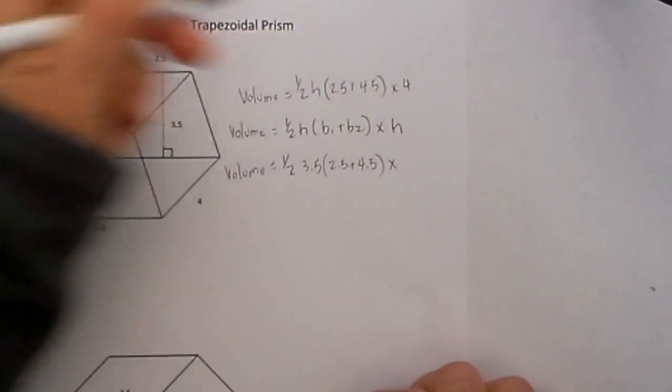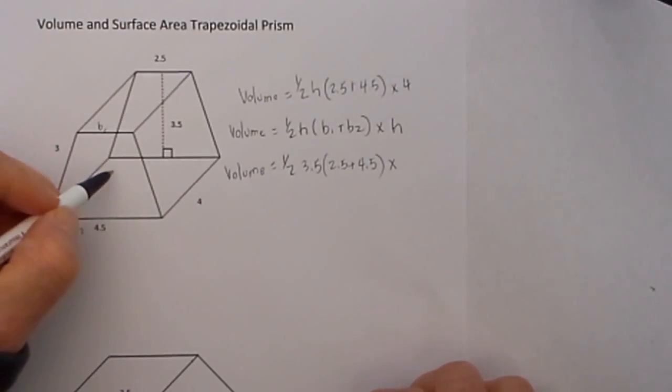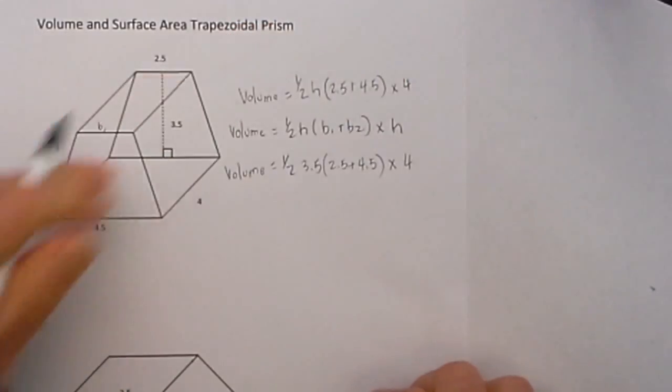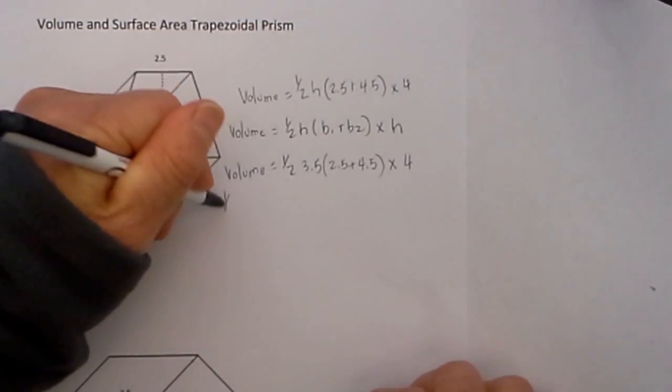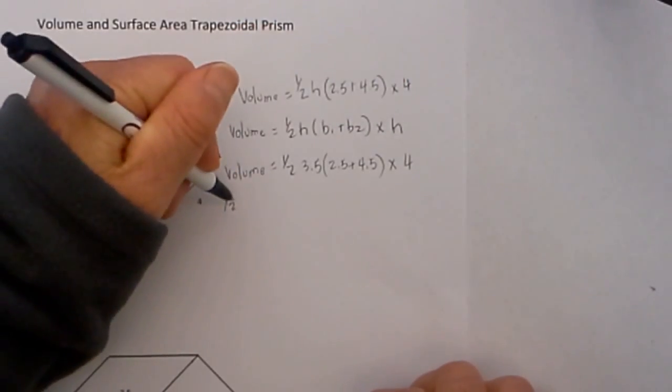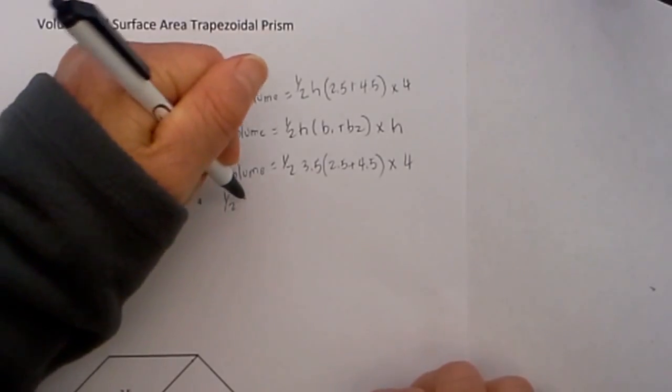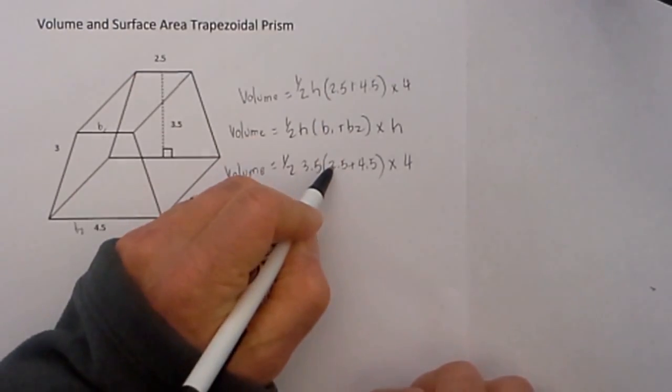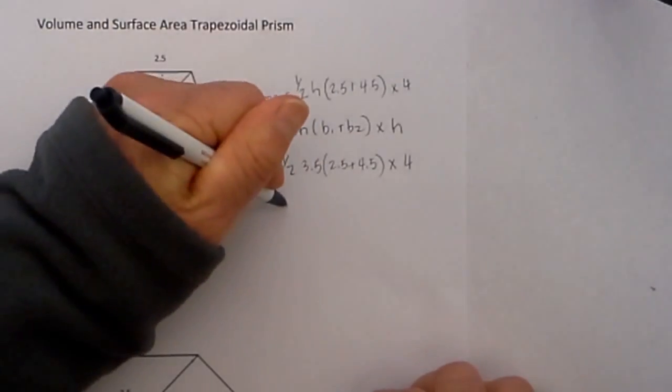And then we multiply all that by the height of the actual prism, which is the distance between these two bases, and that is 4.5. So now let's complete the math: 1/2 times 2.5 plus 4.5 is 7.